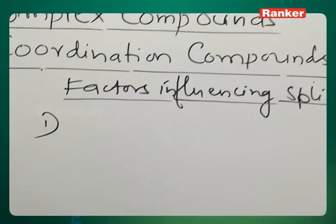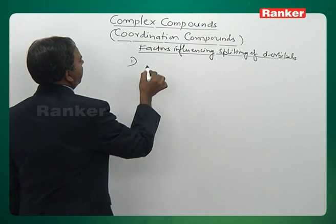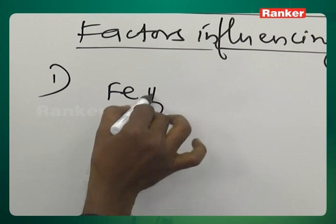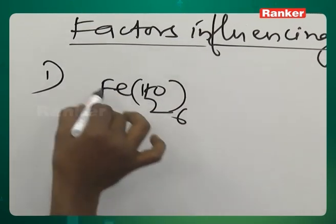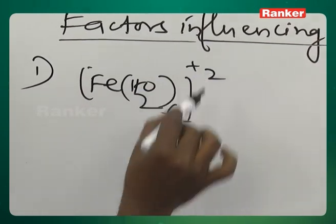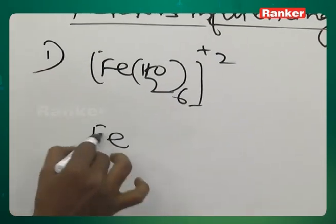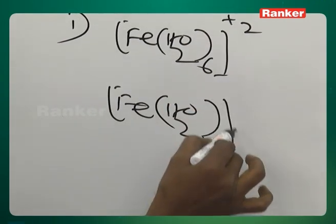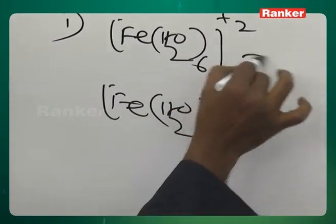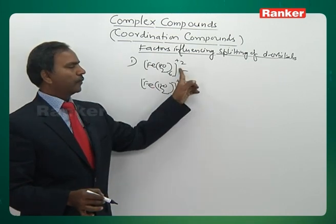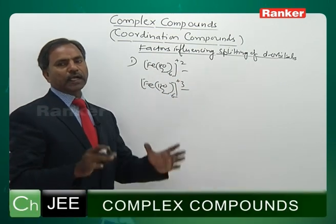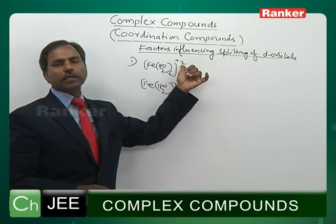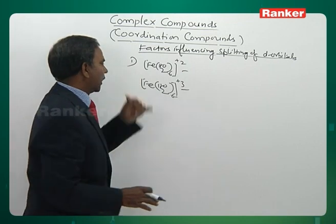First one: same metal ions with different charges. For example, Fe(H₂O)₆²⁺ and Fe(H₂O)₆³⁺ — same metal ion but different charges. Greater the charge density, greater will be the splitting. Lower the charge density, lower will be the splitting.